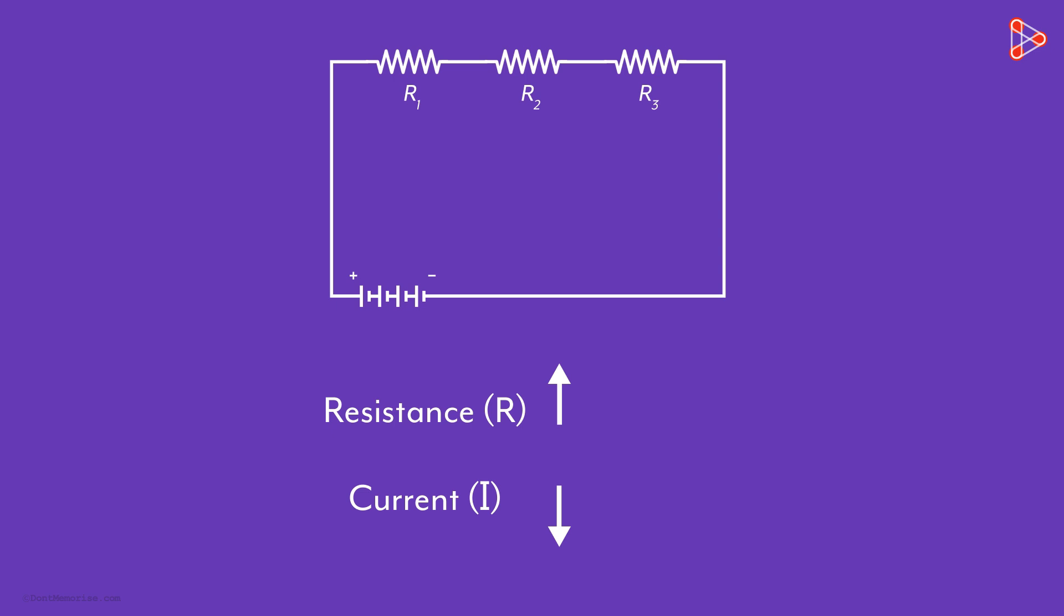The current flowing in the circuit will be the same at every point in the circuit, and the overall resistance will be the sum of the individual resistances.